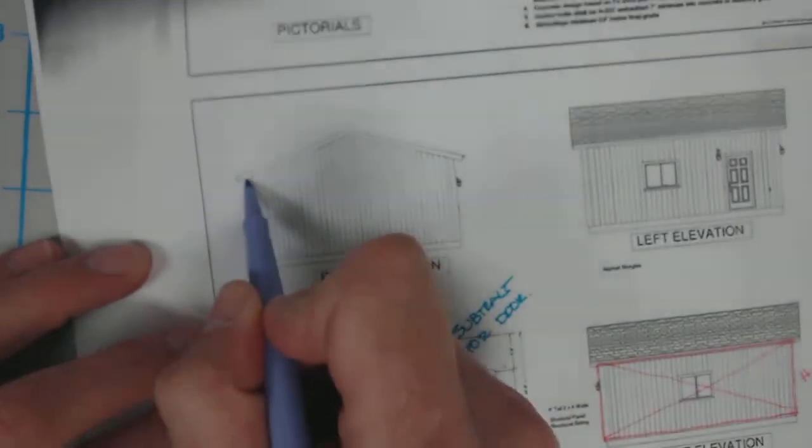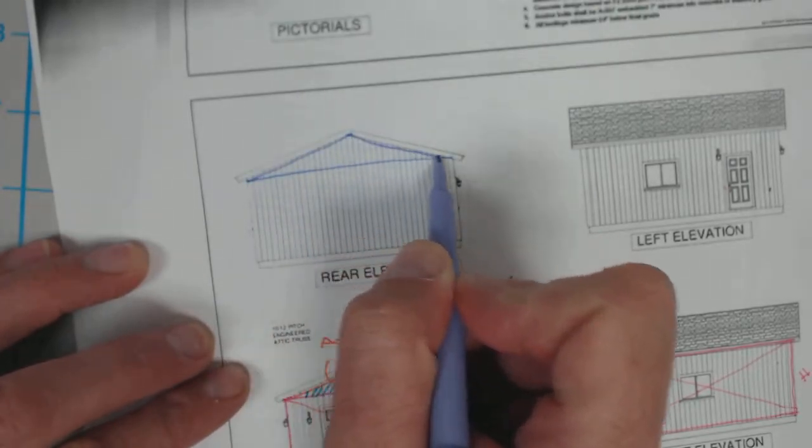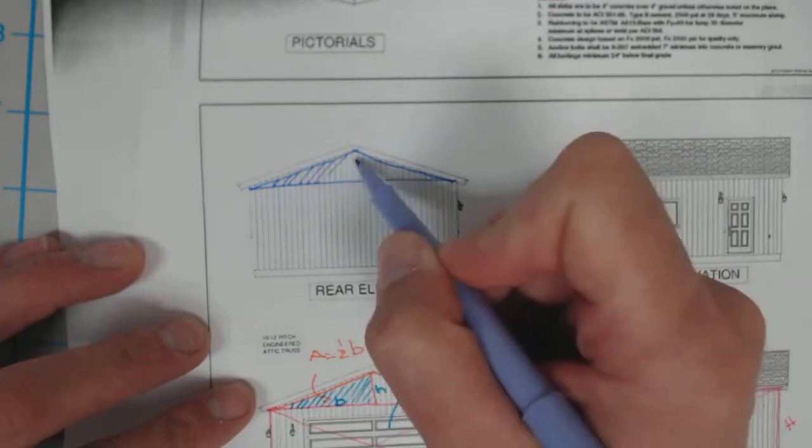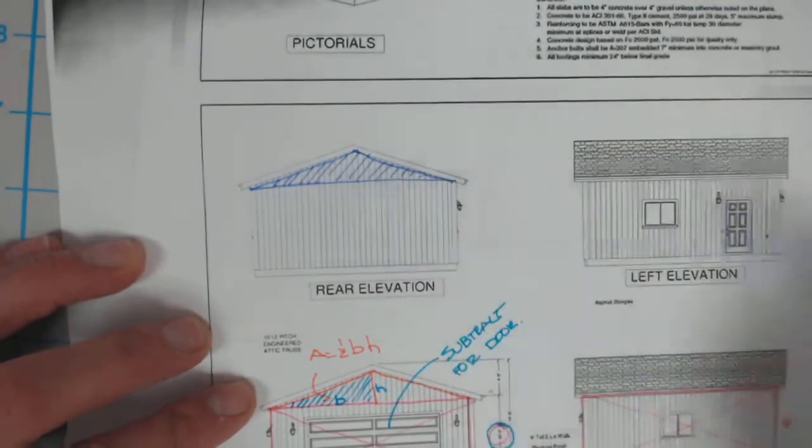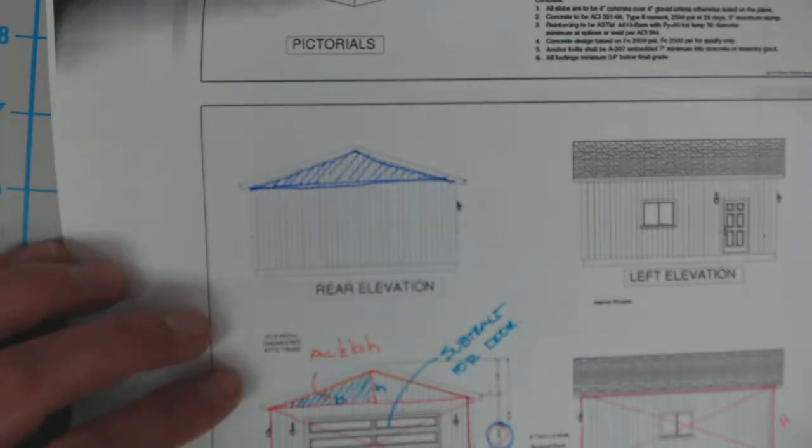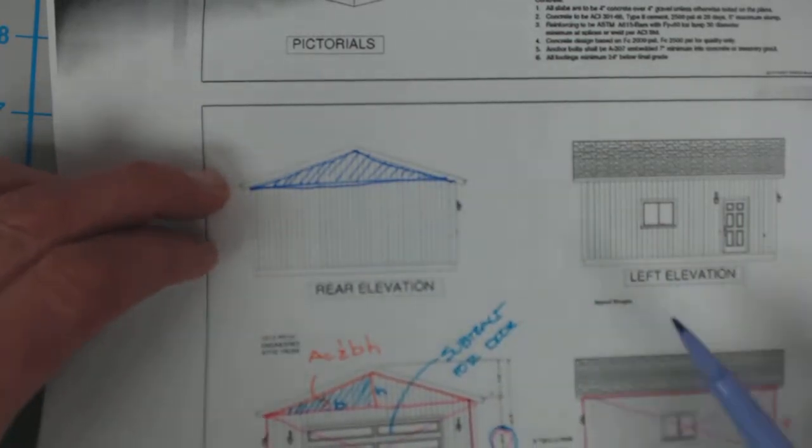However, this time we want to make sure that we do not include the gable end - the triangular gables for the roof - because those are not part of our wall framing. Those are going to be separate trusses; we'll talk about those in a little bit.